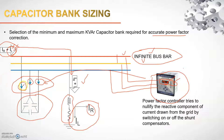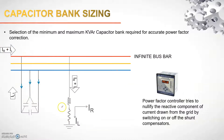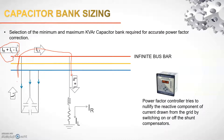As the switches close, a current of IL1 will start flowing from the capacitor bank to the load. So instead of drawing IR + IL from the grid, I will now be drawing IR + IL − IL1.